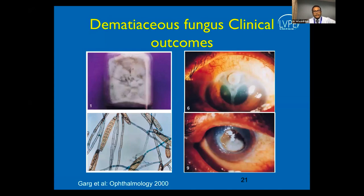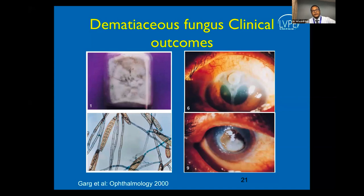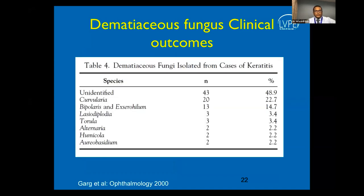Another important etiological agent is Dematiaceous fungus, which is basically pigmented fungi. On Sabouraud dextrose agar they grow as fluffy, cottony, blackish colonies, and on a lactophenol cotton blue wet mount, we see filamentous septate hyphae with a brownish to blackish pigment. Typically these ulcers may also present with pigment around the lesion, hinting at Dematiaceous fungus. The commonest species isolated include Curvularia and Bipolaris.